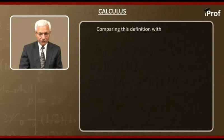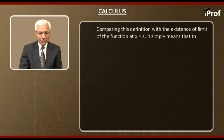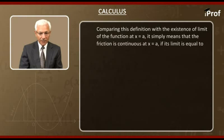Comparing this definition with the existence of a limit of the function at x equal to a, it simply means that the function is continuous at x equal to a if its limit is equal to the value of f(x) at that point.